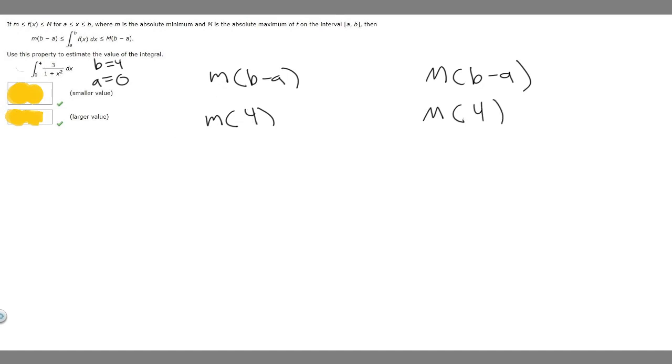But what is lowercase m and uppercase M? So we find those by doing this. We know that lowercase m is the absolute minimum of our function here, so it's going to be 0, right? So we're going to take 0 and then plug it into our function to find m. So if we plug in 0 into this, we'll get 3 over 1 plus 0 squared, which equals 3 over 1, which is just 3. So that means m is going to be equal to 3. So this is just going to become 3 times 4.